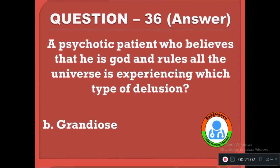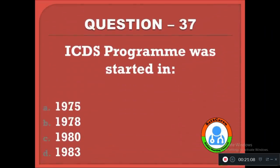Question 37: The ICDS program was started in which year? Option A: 1975, B: 1978, C: 1980, D: 1983. The correct answer is A, 1975.